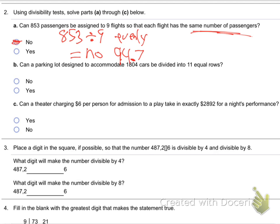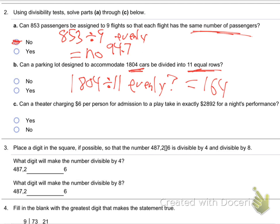Next one. Can a parking lot designed to accommodate 1804 cars be divided into 11 equal rows? Same question. 1804 divided by 11 evenly? I don't know. What's your calculator say? 164 clean? No remainder? No decimal? So yes. 164 cars for each row. Perfectly clean.